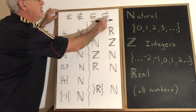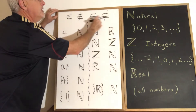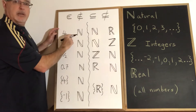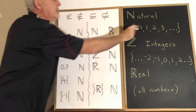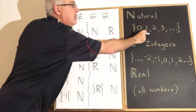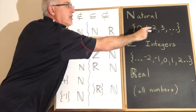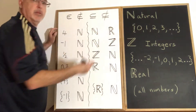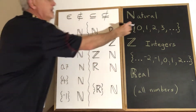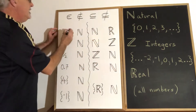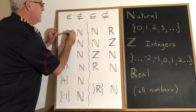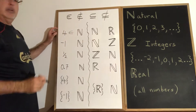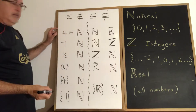Therefore I'm not using either of the subset symbols. Yes, four is an element of natural numbers — although the four is not explicitly shown, the dot dot dot implies that four is a natural number. So I'm using the symbol 'is an element of.'